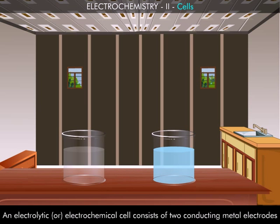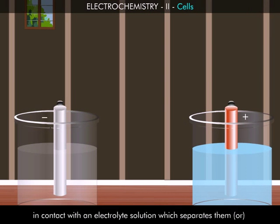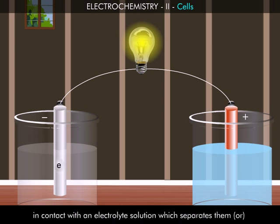An electrolytic or electrochemical cell consists of two conducting metal electrodes in contact with an electrolyte solution which separates them or placed separately in compartments containing suitable electrolytes.